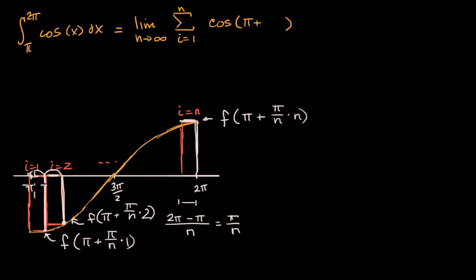plus, if we're with the i-th rectangle, we are going to add π over n, i times. π over n times i, and then that's the height of each of our rectangles. And then what's the width? Well, we already figured that out, times π over n.